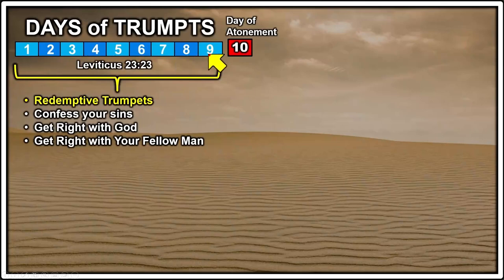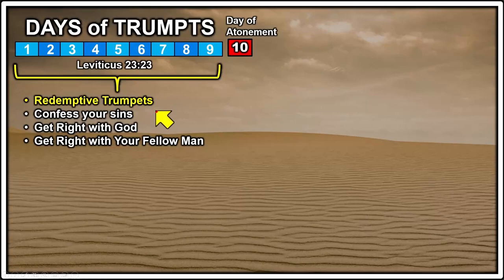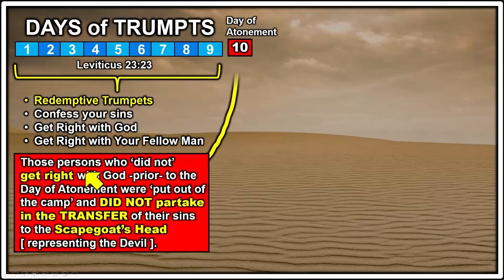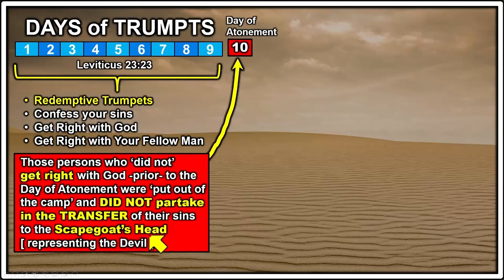The first nine days — read in Leviticus 23 — are what you would call redemptive trumpets: opportunity for the sinner to get right with God and their fellow man and not be lost. Those persons who did not get right with God prior to the Day of Atonement were put out of the camp and did not partake of the transfer of their sins to the scapegoat's head — their sins remained on themselves.